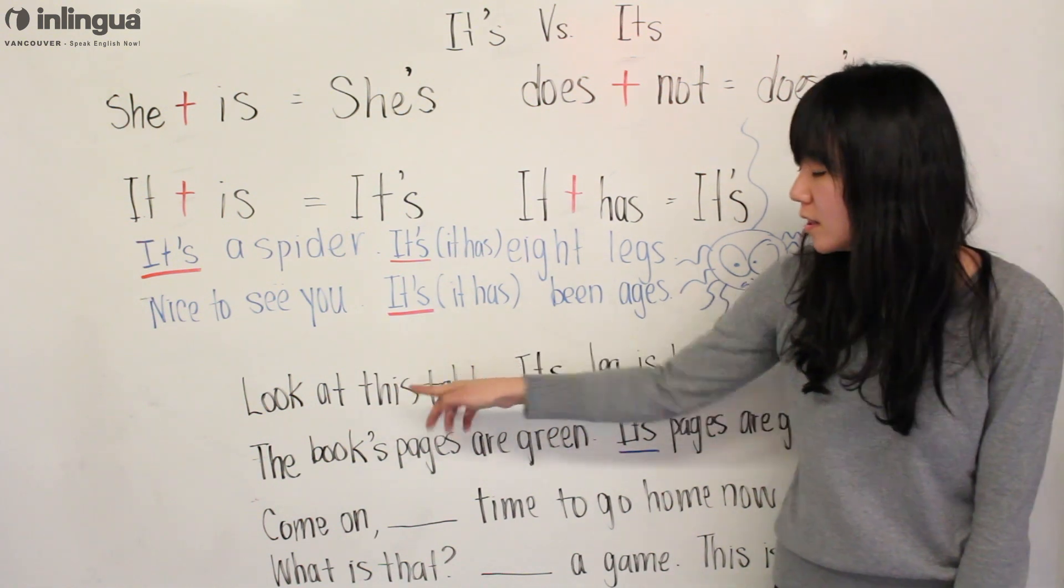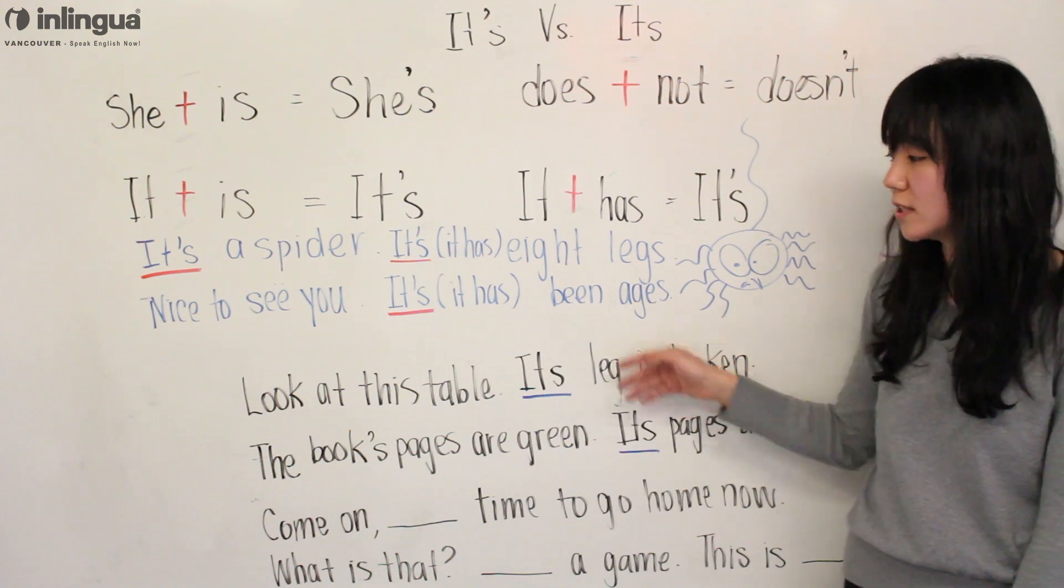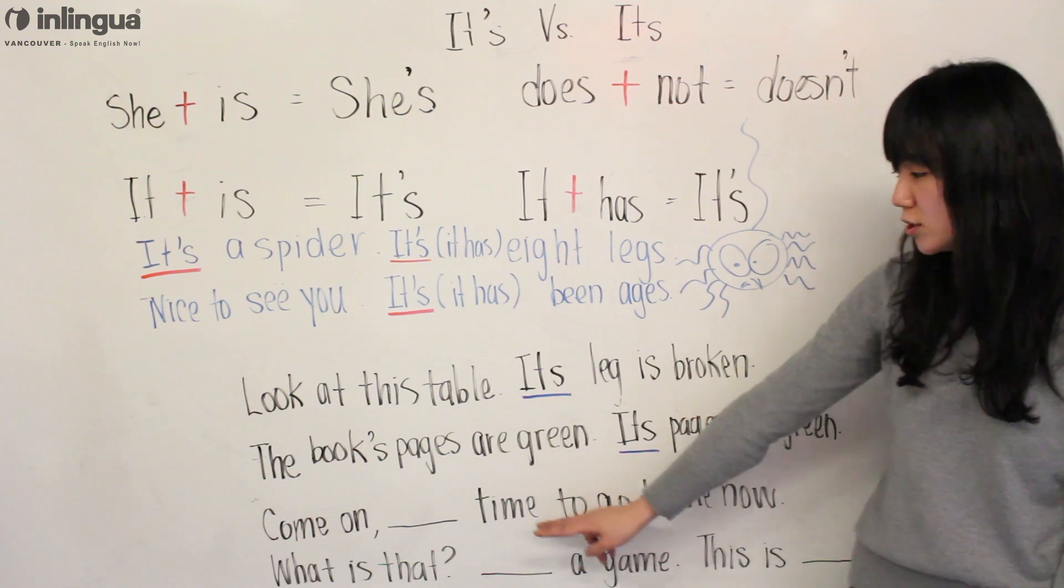So ITS—look at this table. ITS leg is broken, so the table's leg is broken. Let's come down over here and you can see there's two examples.